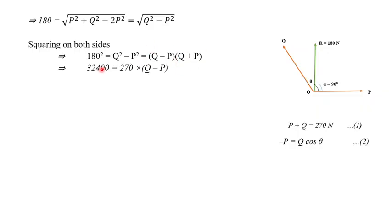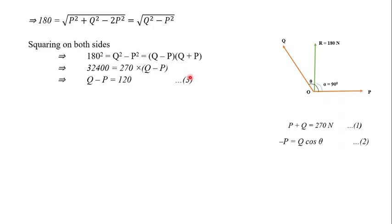Substituting, we get 32400 = 270 × (Q − P). Therefore, Q − P = 32400 / 270 = 120 Newton.